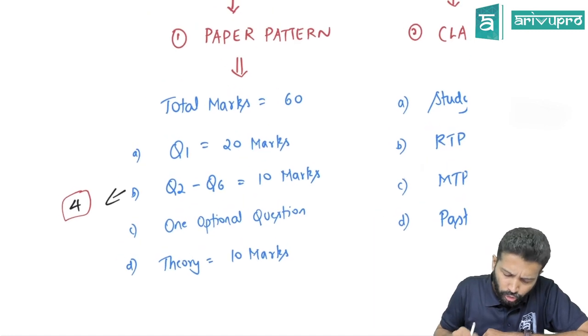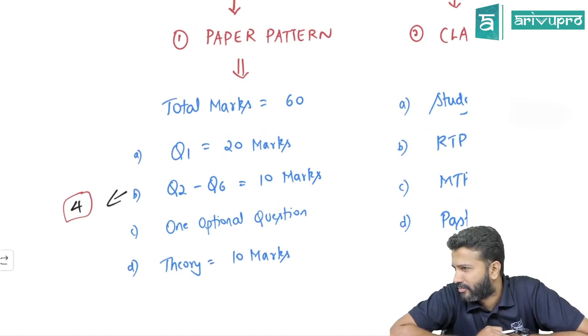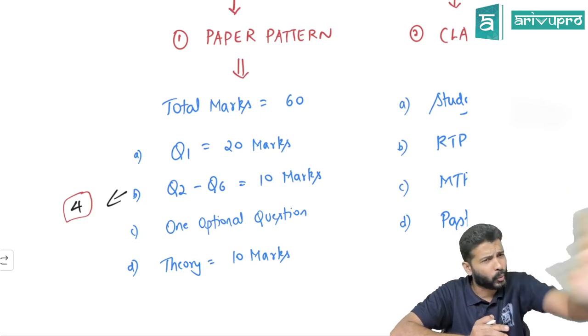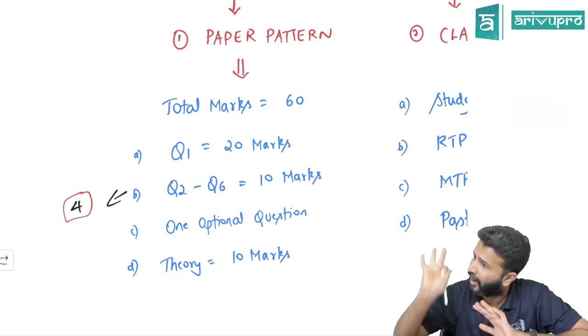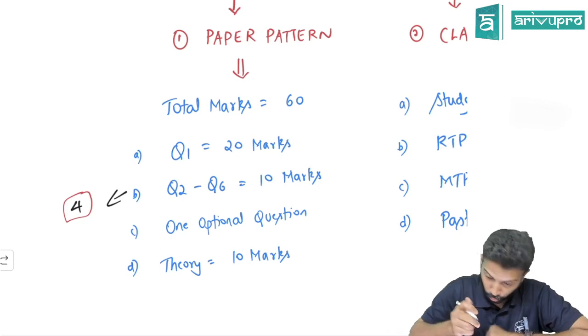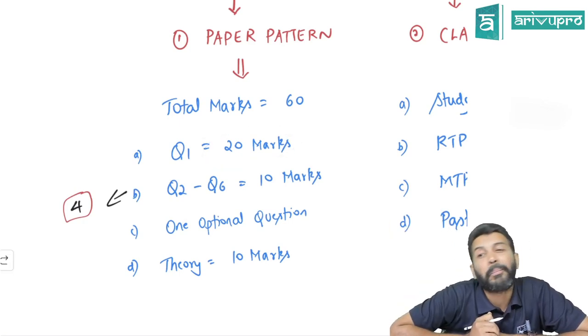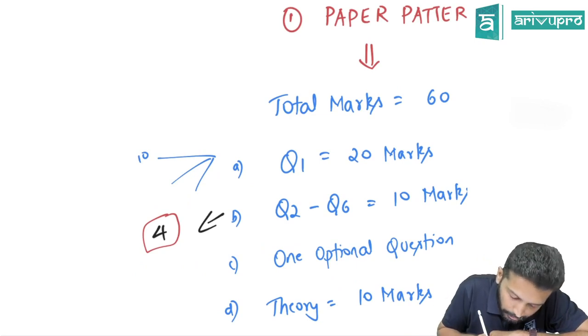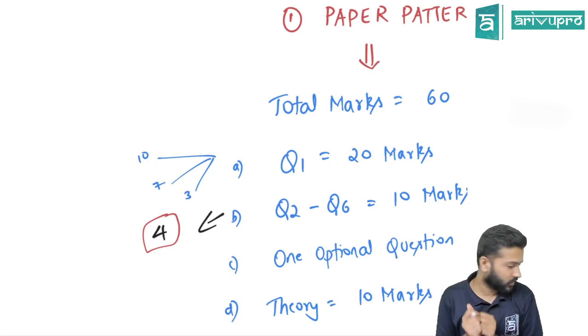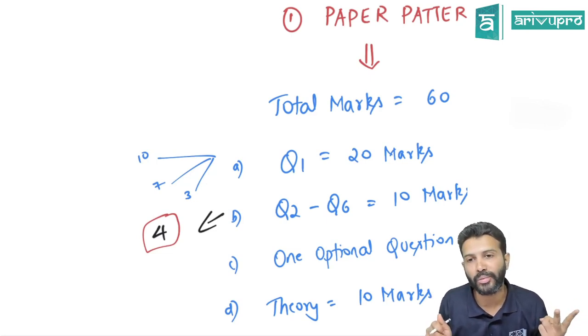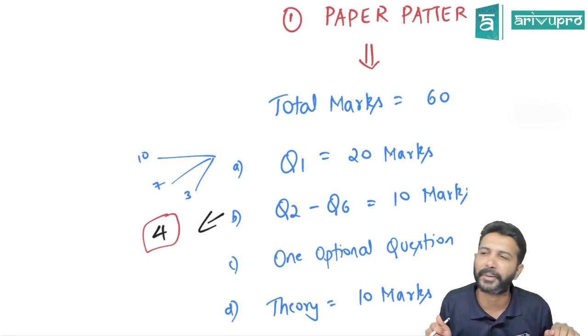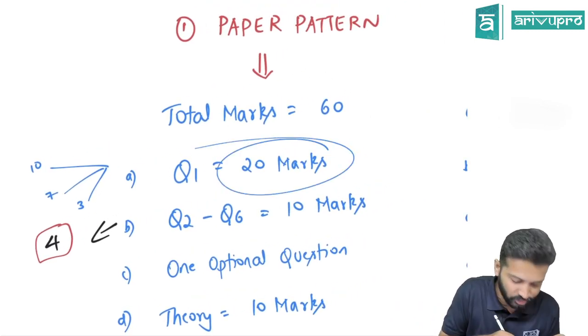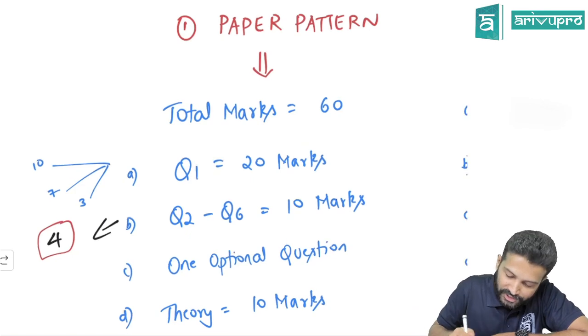The pattern is very simple. First question number is for 20 marks - a compulsory question you can't skip. You can attempt it first, midway, or last, but you have to attempt it. This one question of 20 marks could have subparts - three subparts, two, four, or just one. Who decides that? ICAI, our mother body.